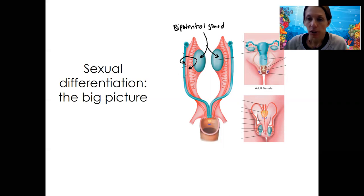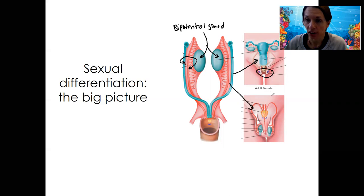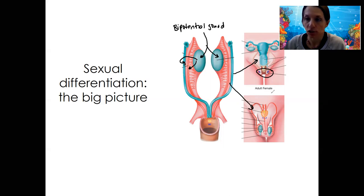Here are the two systems. You can become female — this involves all primary sex characteristics: the internal genitalia and some external — or you can become male. These are all primary sex characteristics shown in this picture.